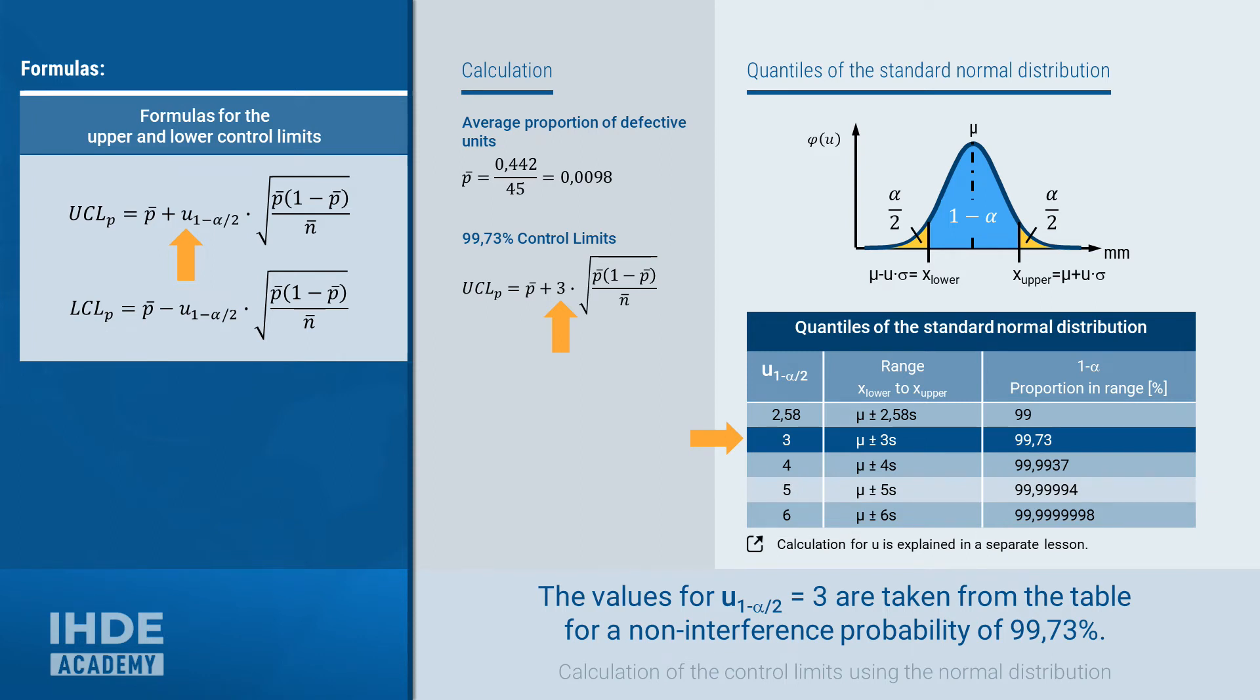In relation to the upper bell curve, this means that it can be expected that all values will be between the value x lower and x upper with a probability of 99.73%. For 99.73%, the quantile u is 3. The value has already been inserted into the calculation in the middle. With p bar, the mean proportion of defective parts of 0.0098 and the mean sample size of 500, the upper control limit is 0.023. A value of minus 0.034 is calculated for the lower control limit. Due to the negative sign, the lower control limit does not apply.